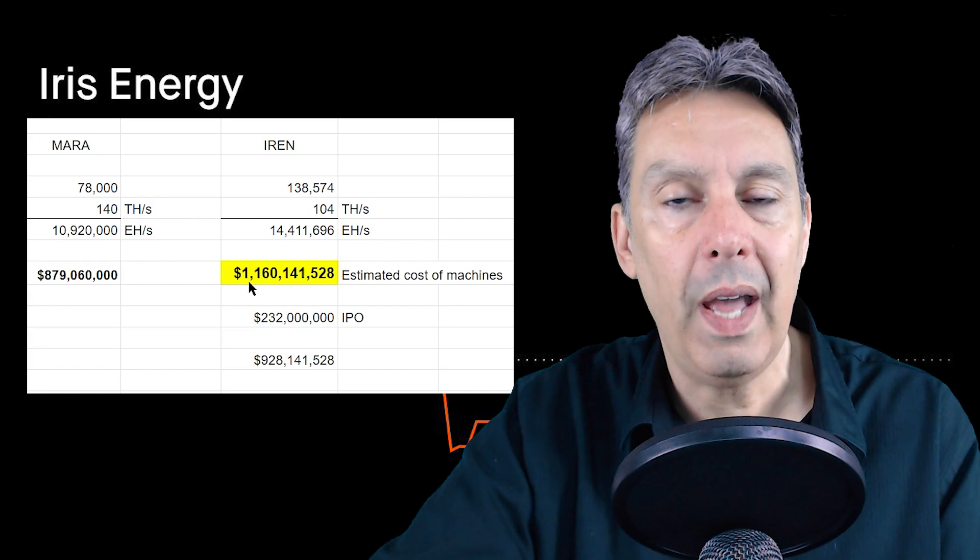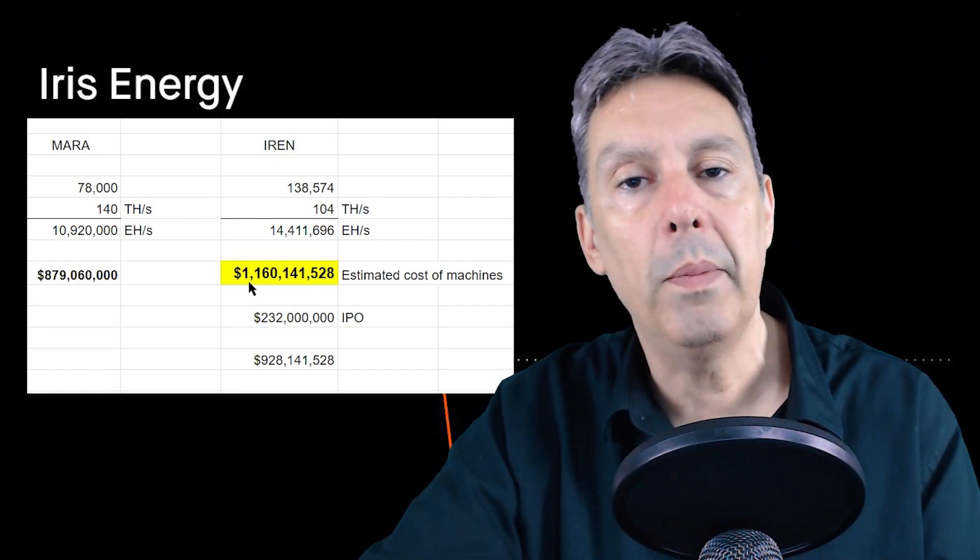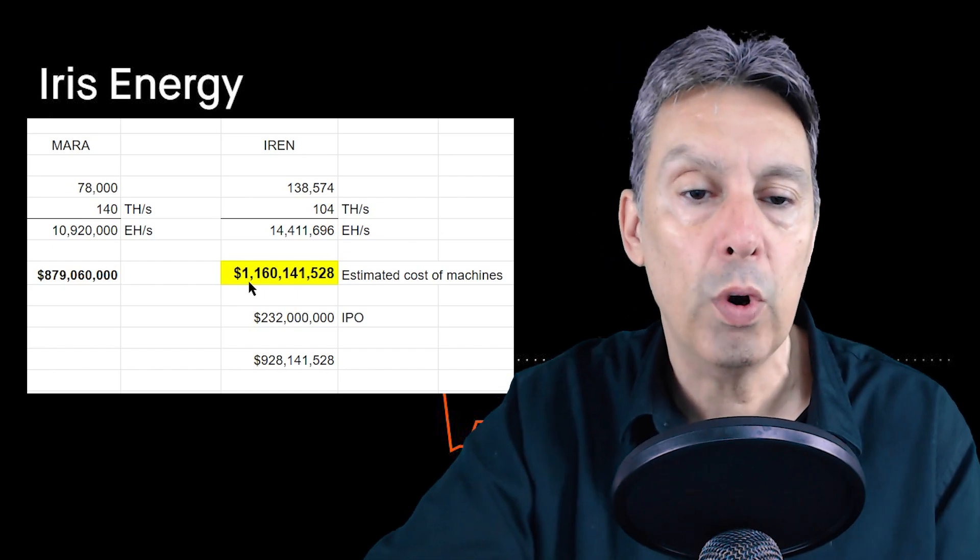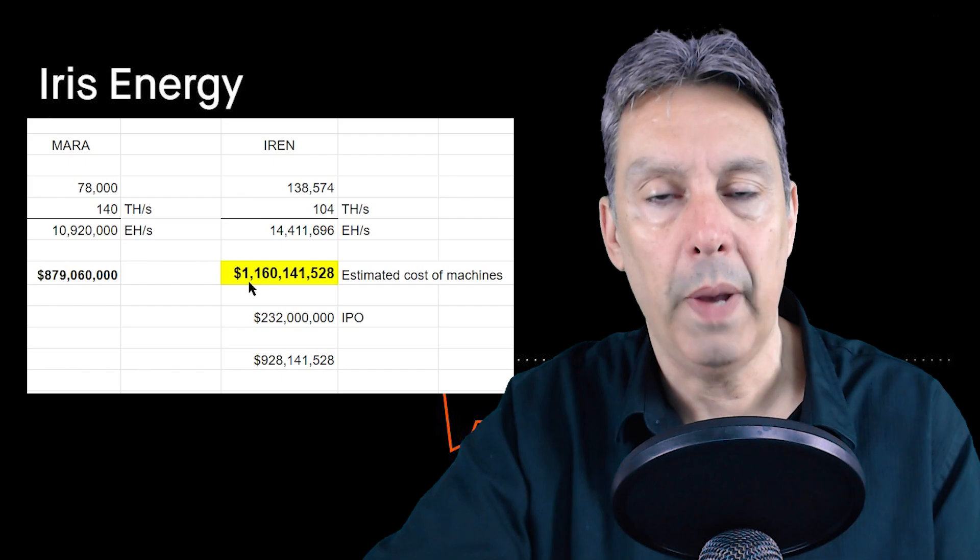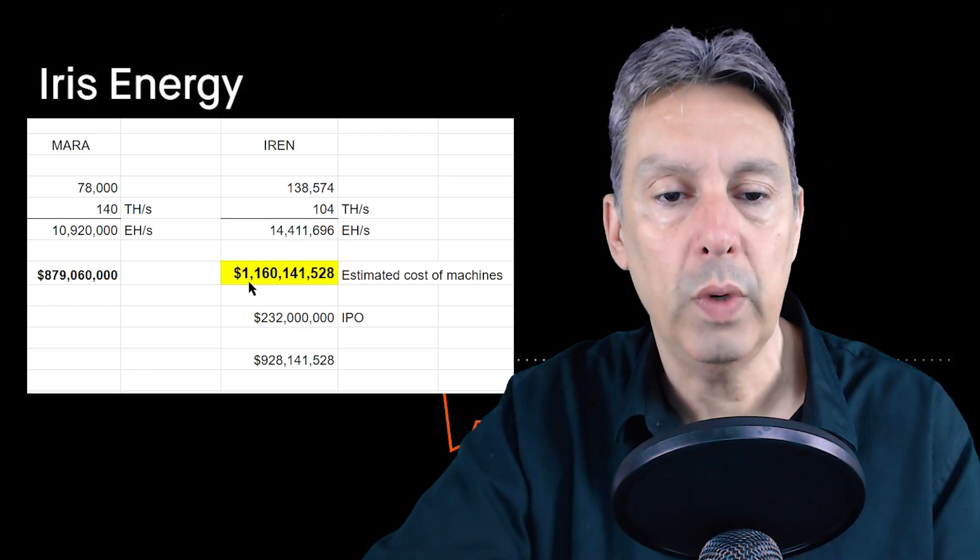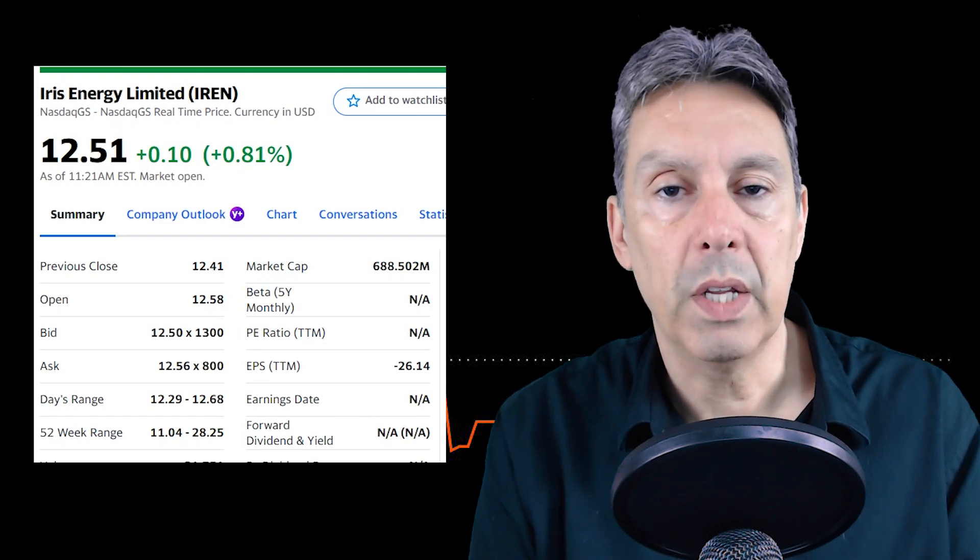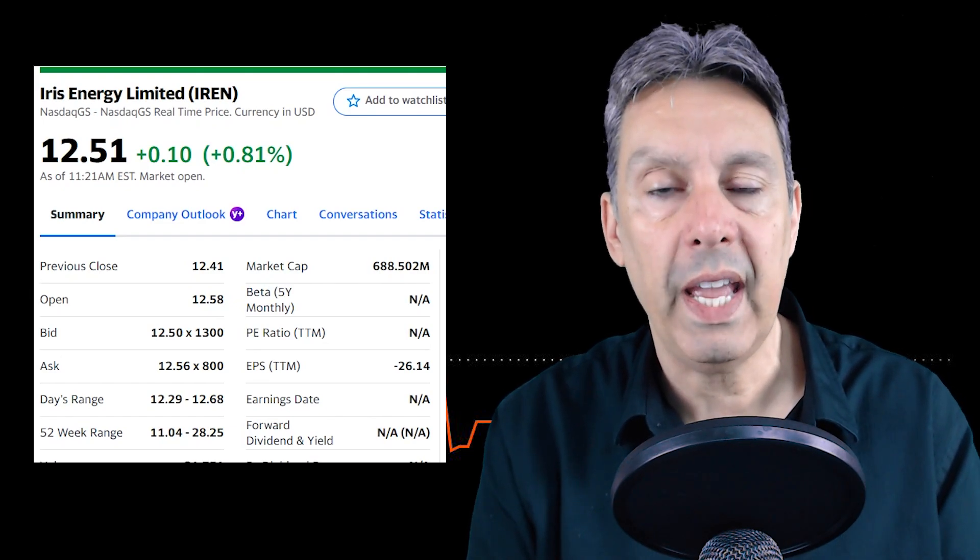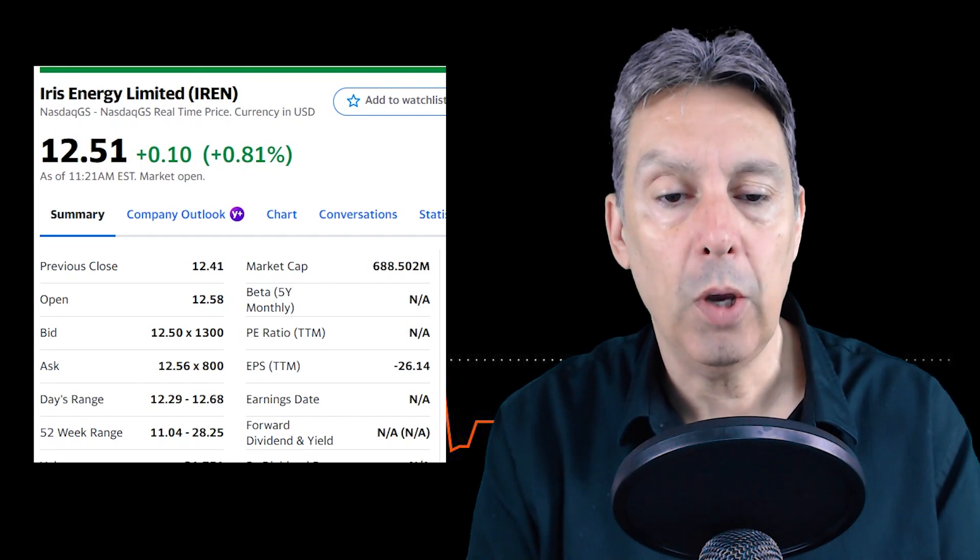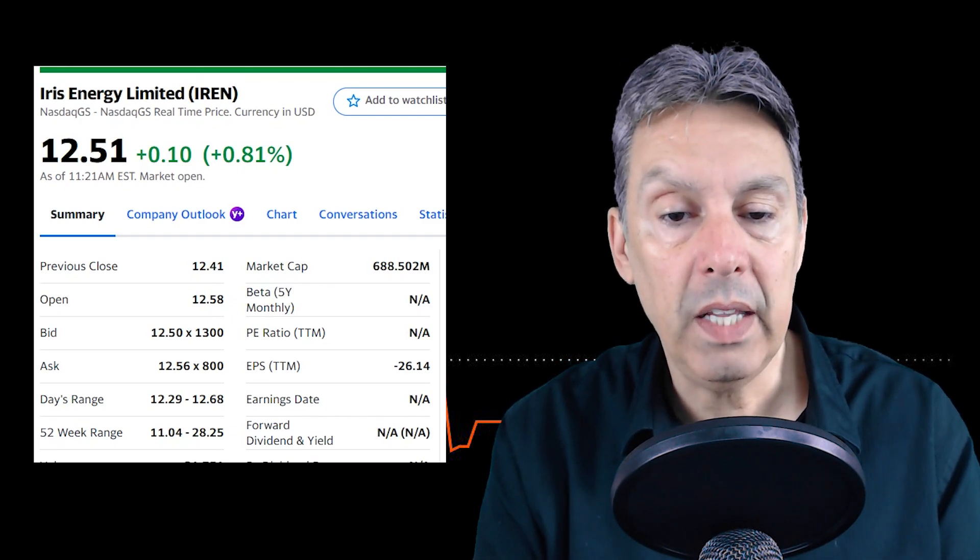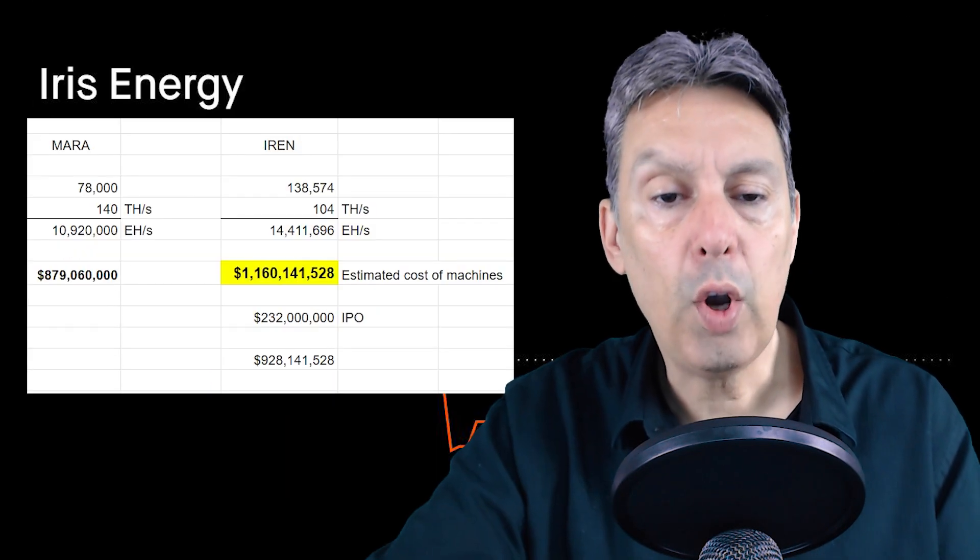If we look at Iris Energy, they're trading at $12.51. Remember they IPO'd at $28, so they are down dramatically from where they IPO'd. My point being that leaves them at a market cap of $688 million. If we go back to my calculation, they need to raise significantly more money than the entire market cap of their company right now.